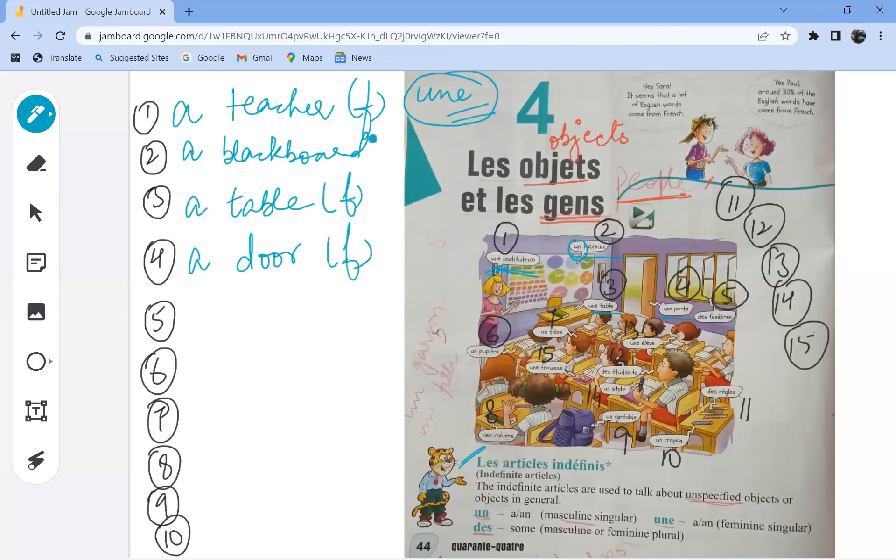A door is again feminine, une table feminine, board blackboard is masculine. How do we say if it's masculine or feminine? We look at it. If une is used, it is feminine, and if un is used, it is masculine.